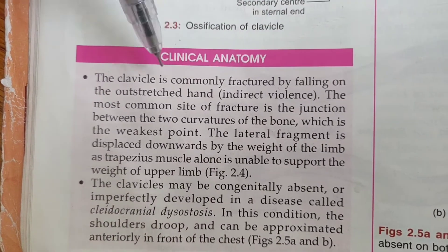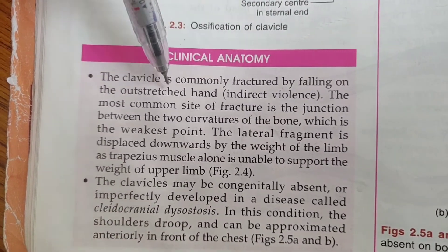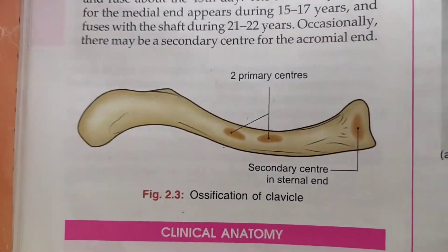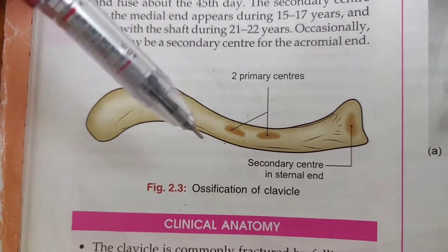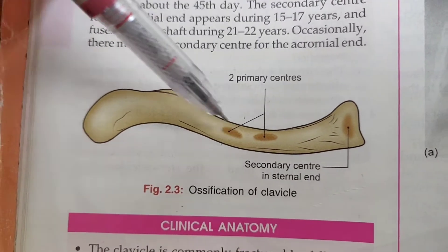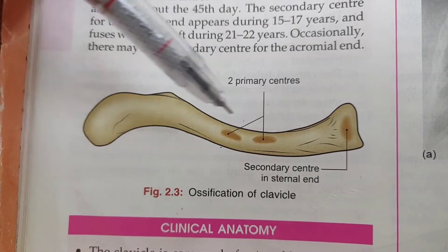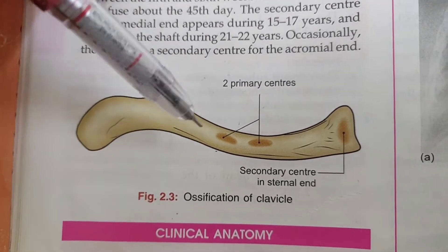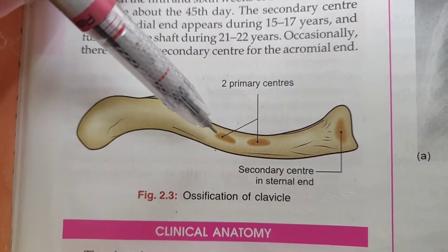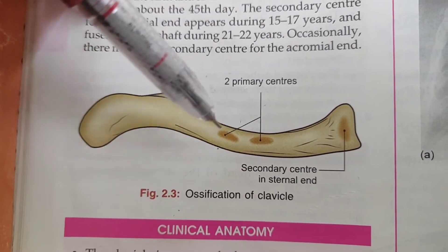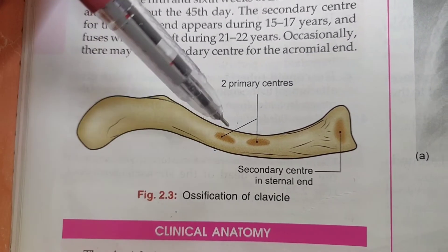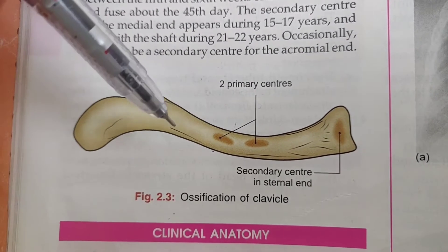The first clinical anatomy is the fracture of the clavicle. The fracture mainly occurs between the two curvatures of the clavicle because this is the weakest point present between the two curvatures, so whenever the fracture occurs...